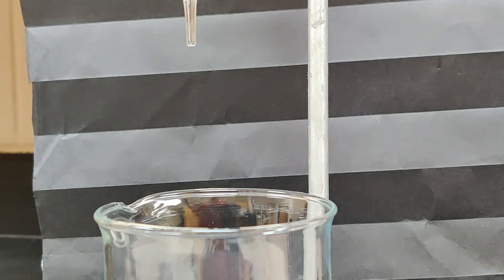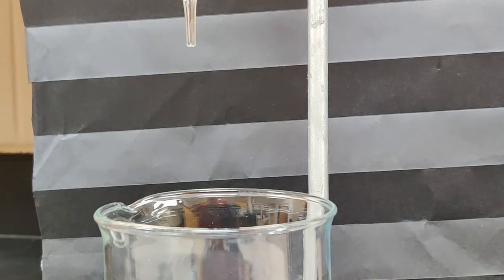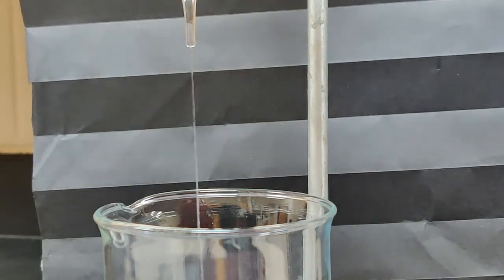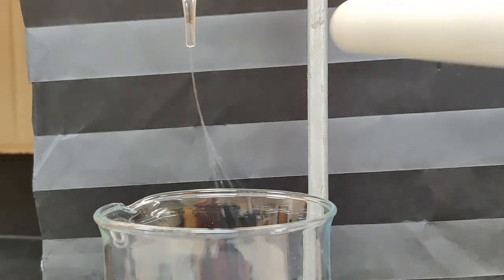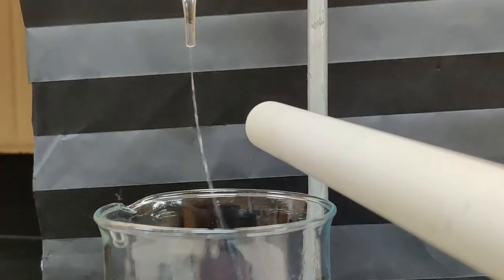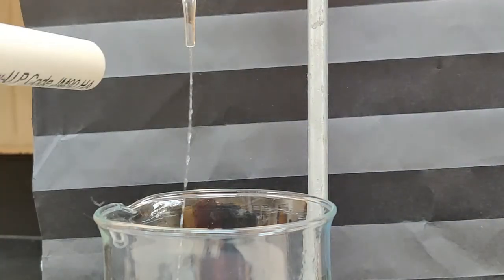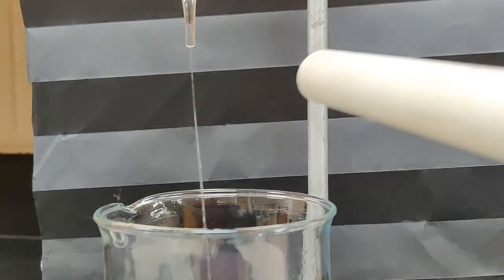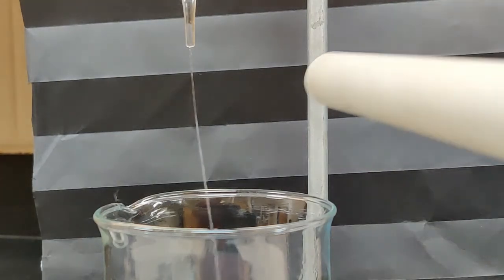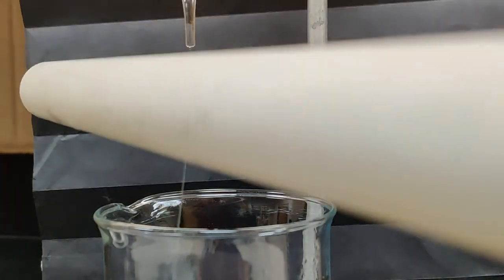So I have essentially the identical setup here with methanol now in the burette instead of water. And I'm going to charge up my rod using some wool to put a charge on the rod. And then we'll start the flow. And we can see it flows the same way, just straight down in a nice coherent stream. But again, if I get the rod close to the stream, the static electric charge affects the stream of the methanol. And does that make sense with what we know and can intuit about methanol?